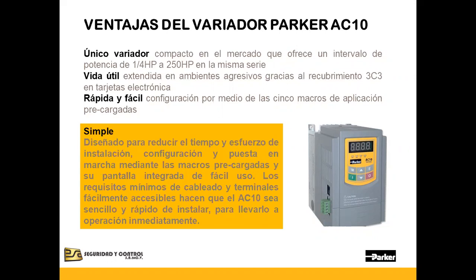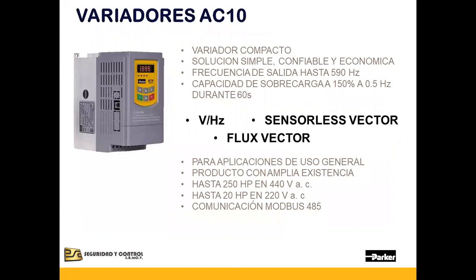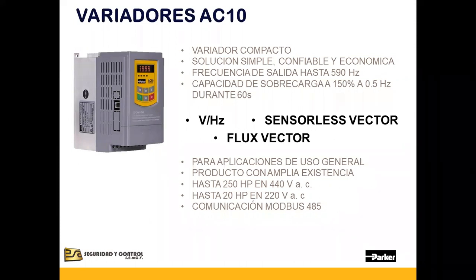Julio Sánchez de Parker comenta que el AC10 no maneja flux vector, solamente los dos primeros modos. Existen tres formas de control: voltaje-frecuencia, sensorless vector y flux vector. El AC10 incluye los primeros dos —volt por hertz y sensorless vector— pero no así flux vector, que está disponible en el AC30 y en el 890. Volt por hertz y sensorless vector cubren el 90% de las aplicaciones que podemos encontrar en la industria.